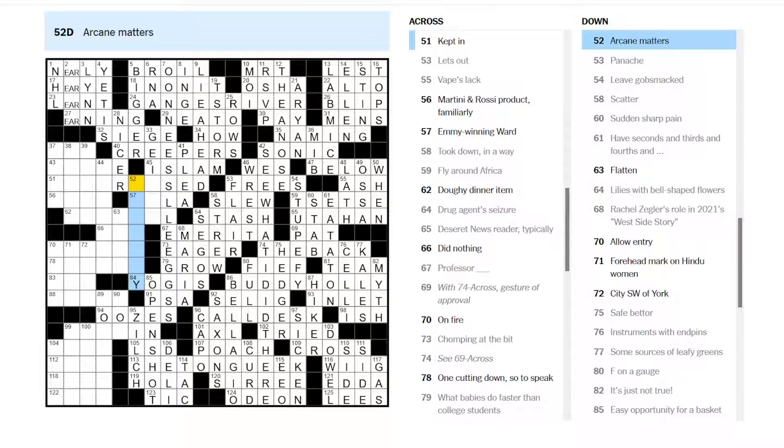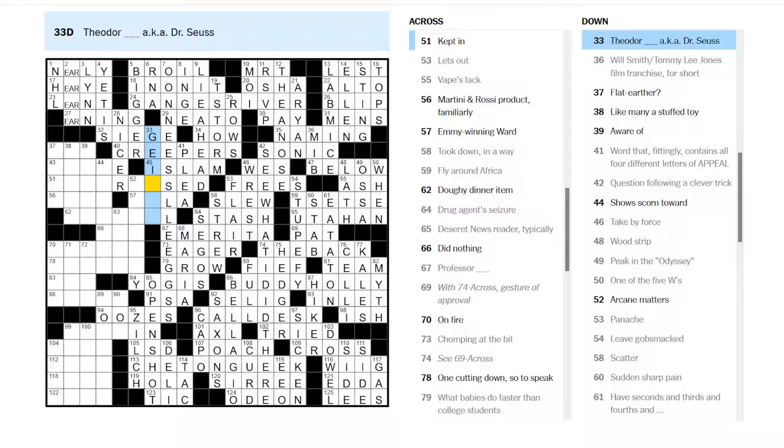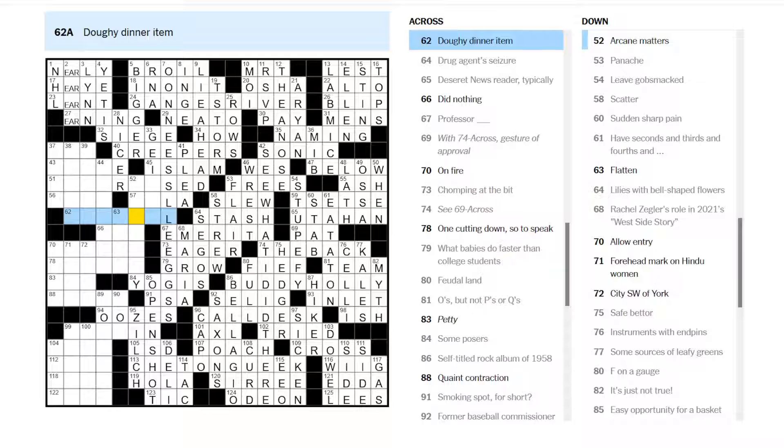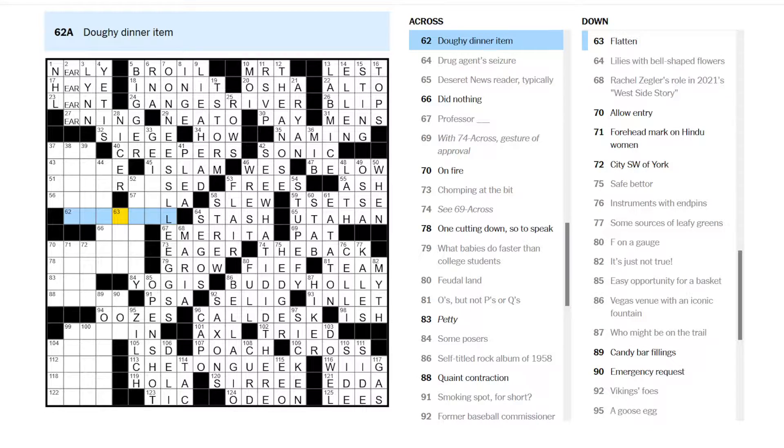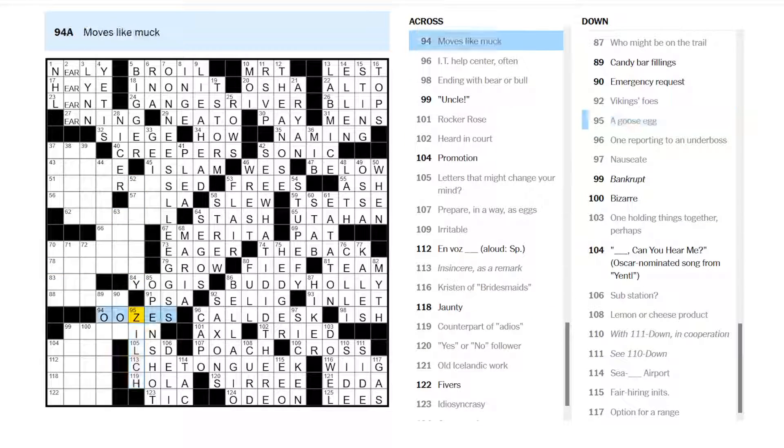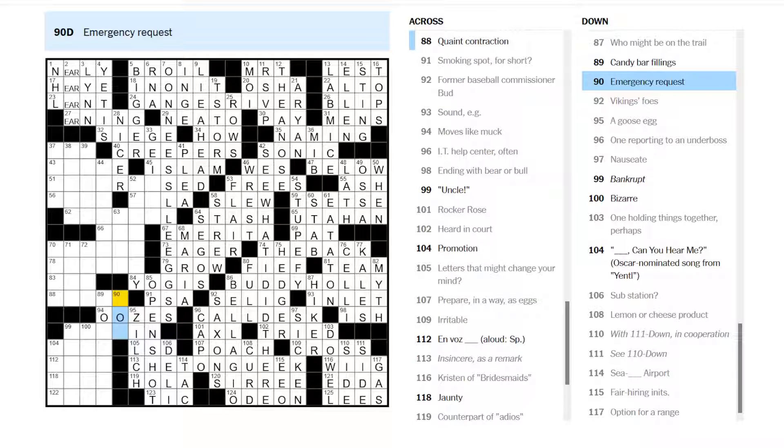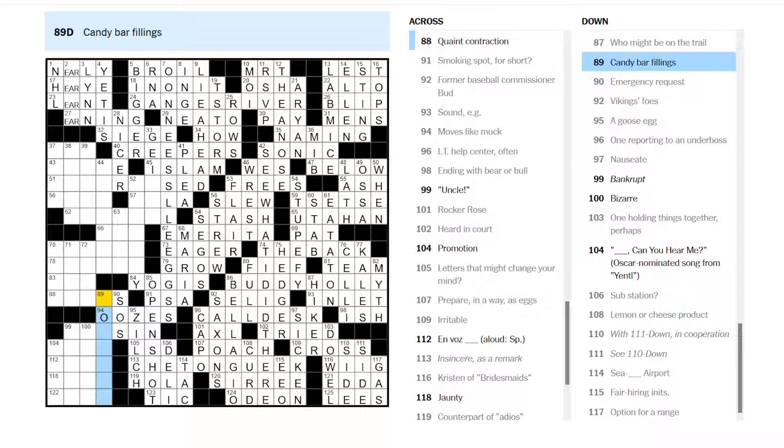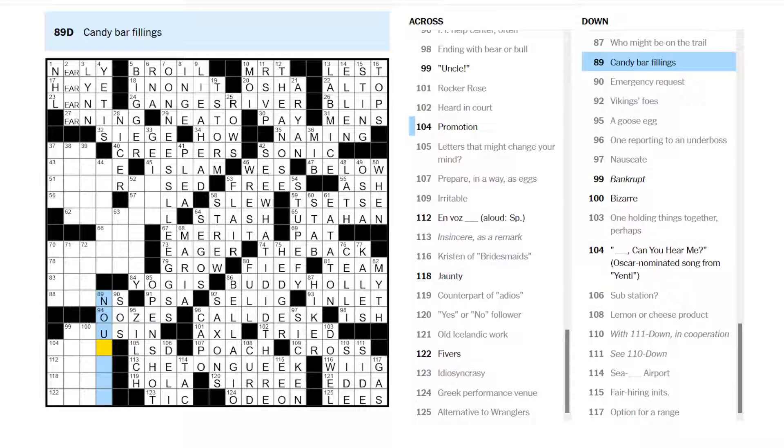Arcane Matters. Like ephemera or something. All right. Dunno. A doughy dinner item. Some kind of roll. Let's see. Maybe we can work our way into this side from this section down here. Emergency request is an S-O-S. Candy bar fillings. Oh, I think this is nougats, but I have no idea how to spell that. Nougats? Like that?